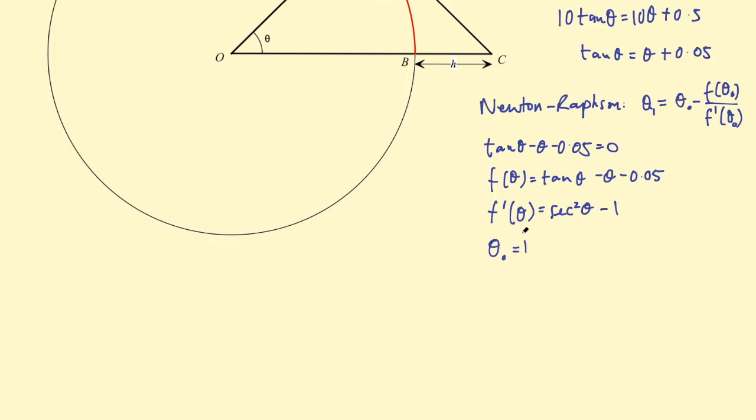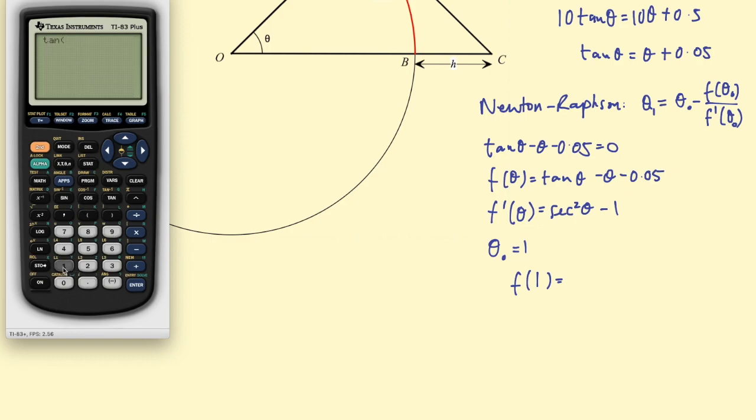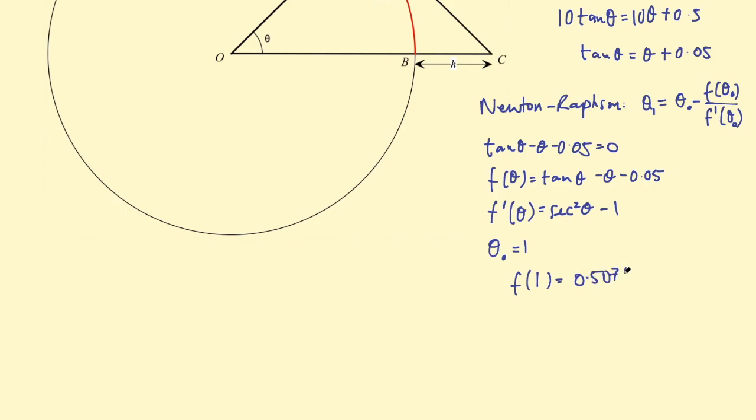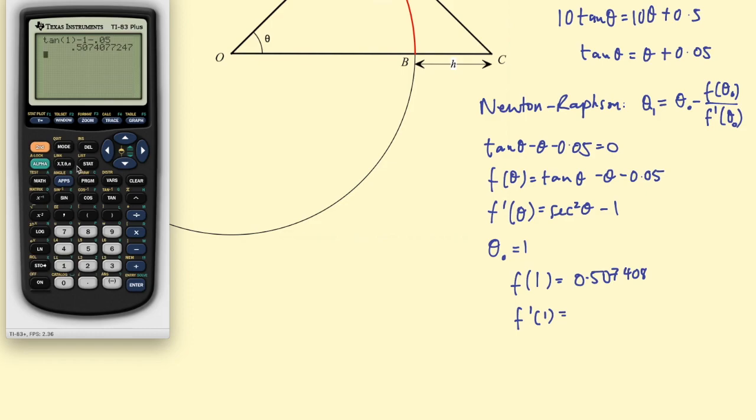Starting with theta sub 0 equal to 1, plugging this into f of theta: f of 1 is equal to tan of 1 minus 1 minus 0.05. Let's put that into a calculator: tan of 1 minus 1 minus 0.05, and I get 0.507407, rounding to six significant figures to try to get some level of accuracy. Then f dash of 1—I don't have the secant function on my calculator, so I'm going to do 1 over the cosine of 1 squared minus 1. 1 over the cosine is the same as the secant function, and this gives me 2.42552.